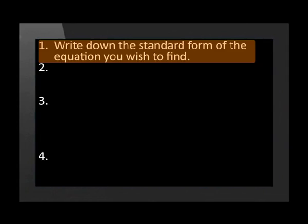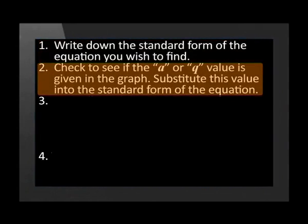Here is a list of tips to help us with finding the equation of a function. Step 1: write down the standard form of the equation you wish to find. Step 2: check to see if the a or q value is given in the graph, then substitute this value into the standard form of the equation. In easy problems, it may be enough to just do steps 1 and 2 to find the equation. In most questions, we will only be able to find one of the variables in step 2 and we have to move on to steps 3 and 4.